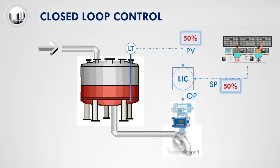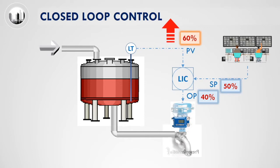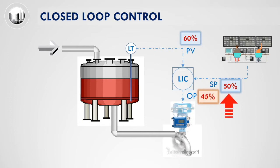In this example, the process disturbance has caused the level in the tank to increase. The increase in level is measured by the level transmitter as PV. The PV has now increased to 60 percent. Since the PV is now higher than the set point, the LIC will increase the valve opening. The objective is to bring the level back to the set point. After the valve opens more, the level in the tank will reduce back to the set point.